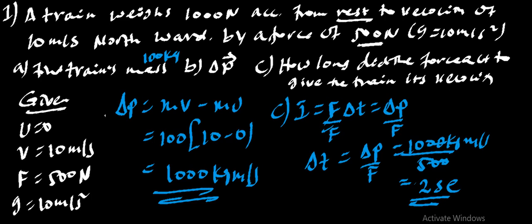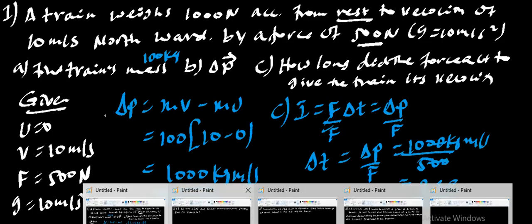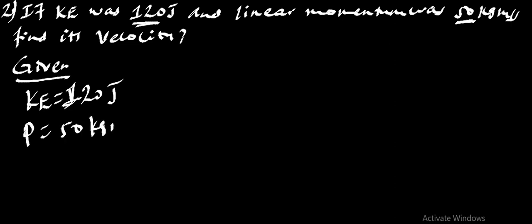This is the time taken to act on the train. Question number 2, if the kinetic energy of the body was 120 joules and the linear momentum was 50 kg m per second, let's calculate the velocity of the body.